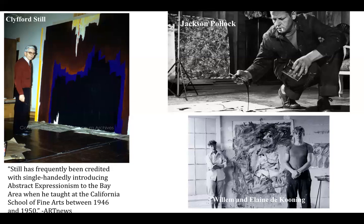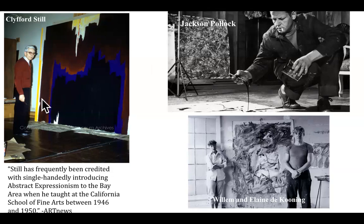In California, everyone was doing abstract expressionism. It was the first time America had its own artistic movement and took that title away from Paris as the center of the art world. Jackson Pollock was on the cover of Life magazine in 1947 and was heralded as the best thing that had happened to art. In California, David Park and Elmer Bischoff — professors at the school — were also doing abstract work.